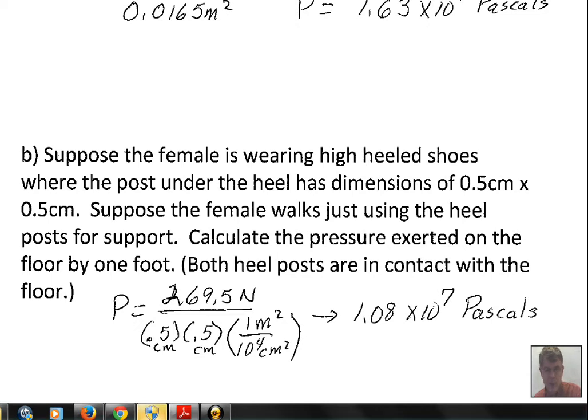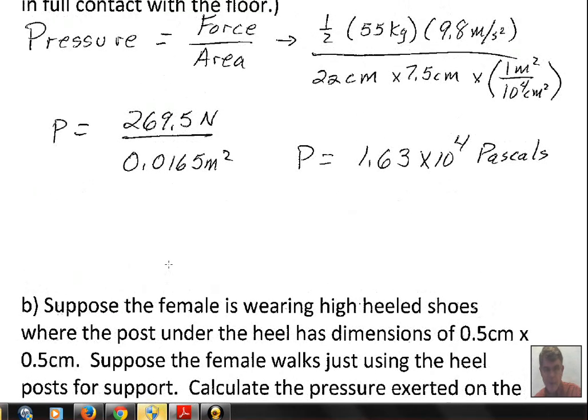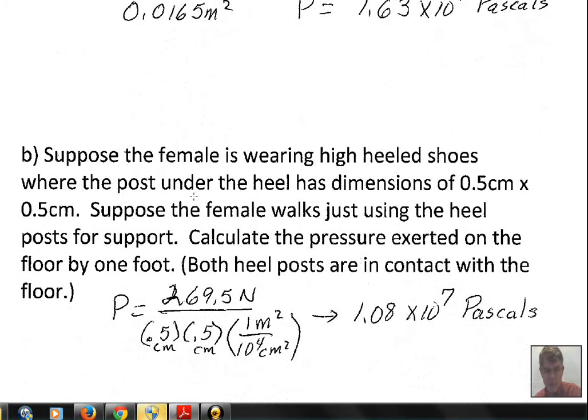What's the pressure now for this one foot? Well, again, pressure is force divided by area. The force is not changed. The person has the same mass. Half of the weight of the person is going to be supported by the one post. So 269.5 newtons, that's again one-half mg.